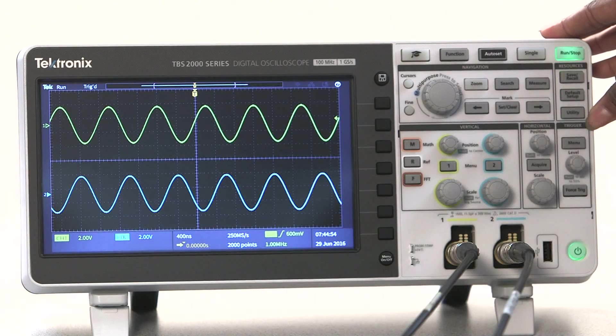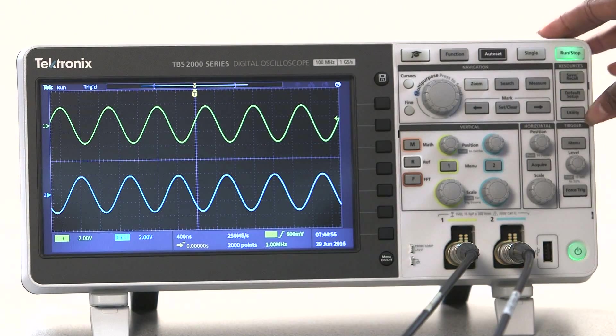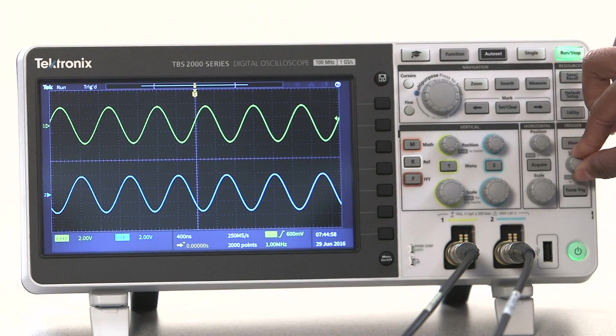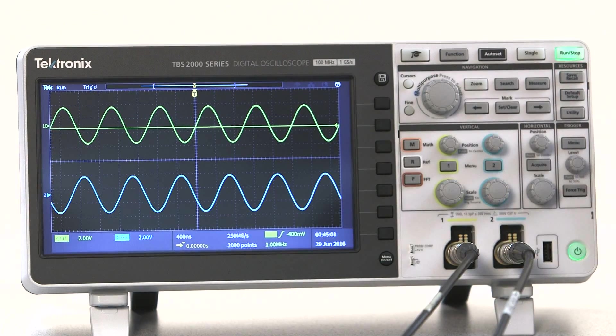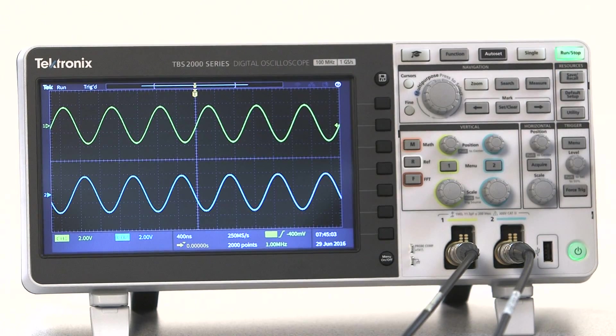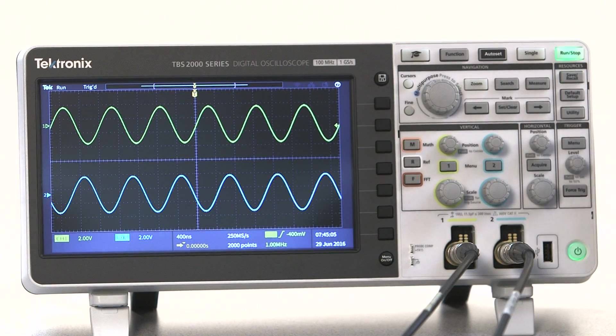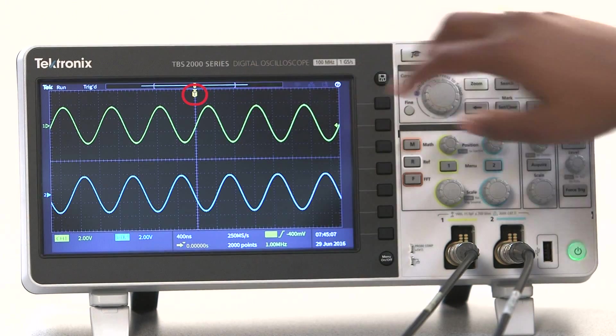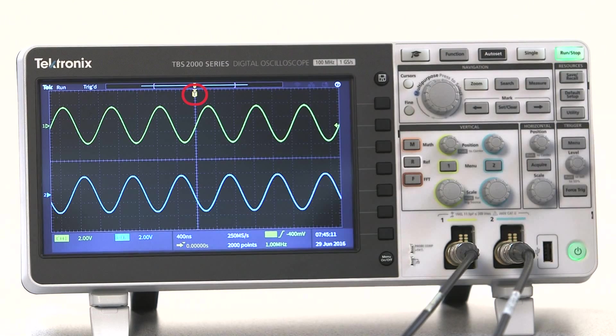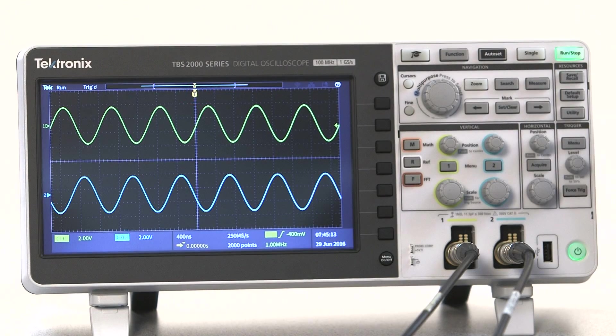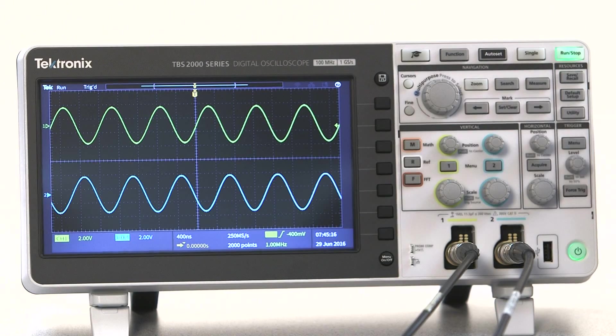Let's take a closer look at the front panel trigger controls. You've already seen me use this control, which controls the trigger level. On this scope, when I adjust the trigger level, it shows up on the display to help me out with the setting. The small T icon shows the trigger point. Since we're using edge triggering, the trigger point lines up with the intersection of input signal and trigger level.